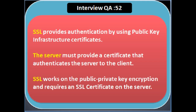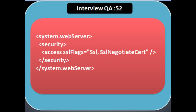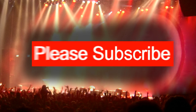Question 52: explain SSL with Web API. Several common authentication schemes are not secure over plain HTTP — basic authentication and forms authentication send unencrypted credentials, so to secure these we must use SSL. SSL provides authentication using public key infrastructure certificates. The server must provide a certificate that authenticates it to the client. SSL works on public key encryption and requires an SSL certificate on the server. You can add this option in the applicationHost.config file under system.webServer in the security section.